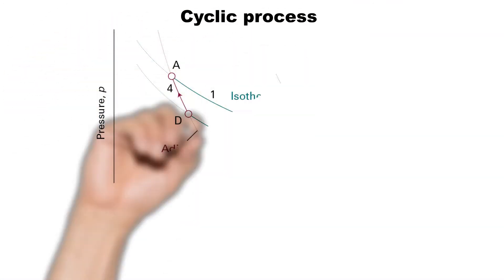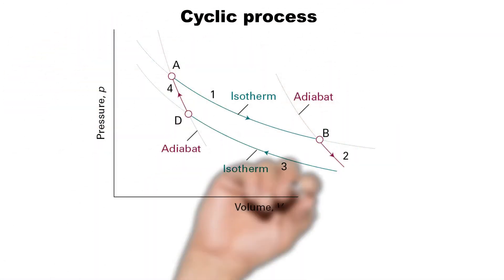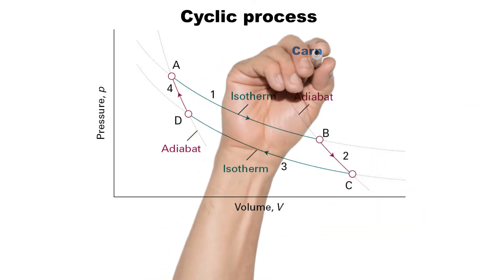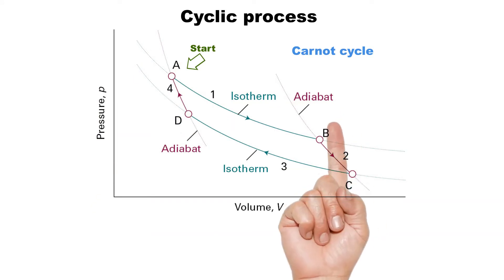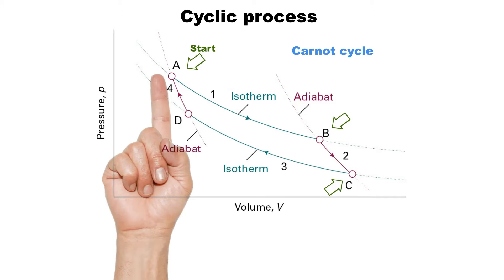A system is said to have undergone a cycle if it returns to its initial state at the end of the process. That is, for a cycle, the initial and final states are identical. The Carnot cycle is an example of cyclic process that we will study later in this course.